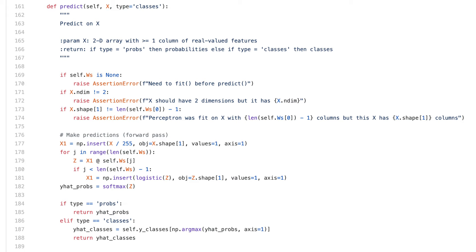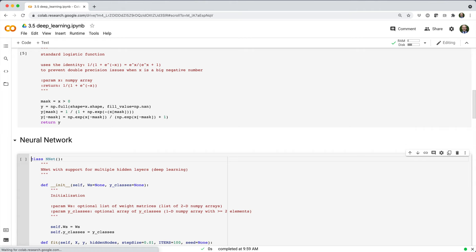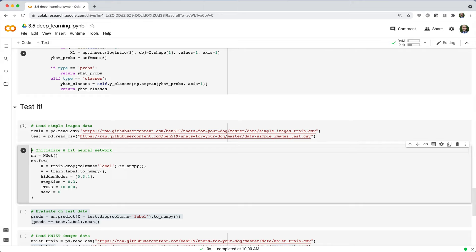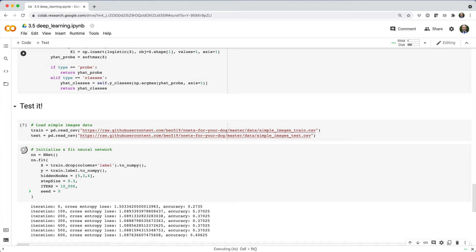Let's see how a deep neural network performs on the simple images dataset. Here I'll train a neural network with three hidden layers. Five nodes in the first hidden layer, three nodes in the second hidden layer, four nodes in the third hidden layer.